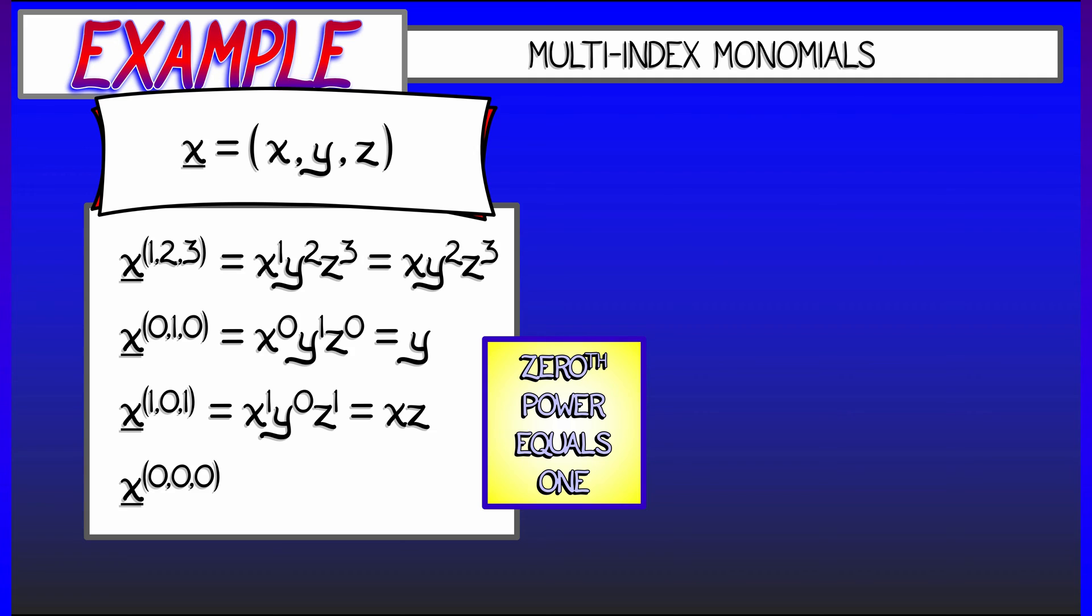And what is x to the (0, 0, 0)? Well, you can figure that one out. That's not hard. That's simply equal to 1.